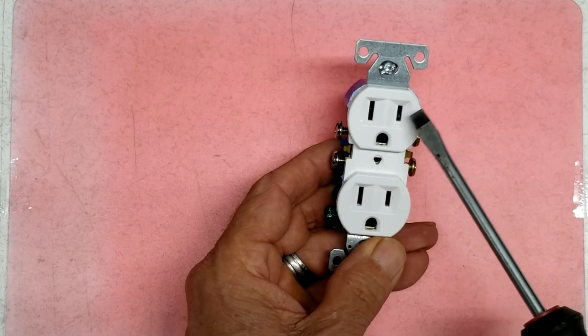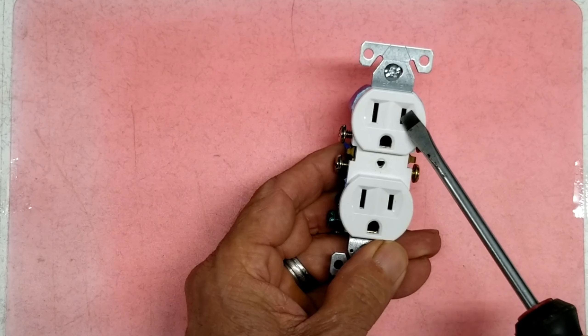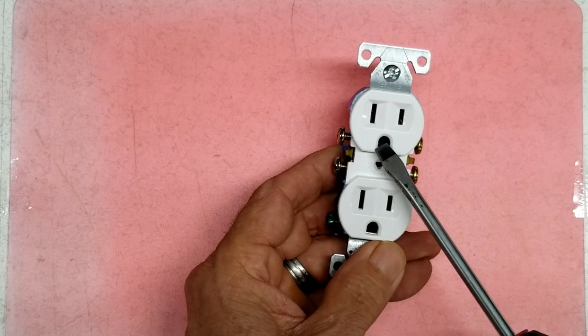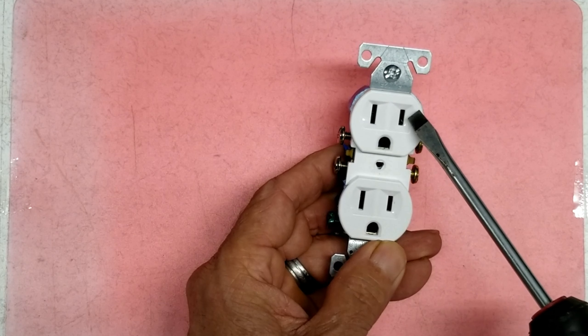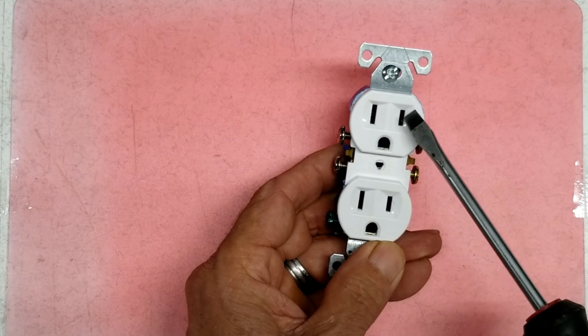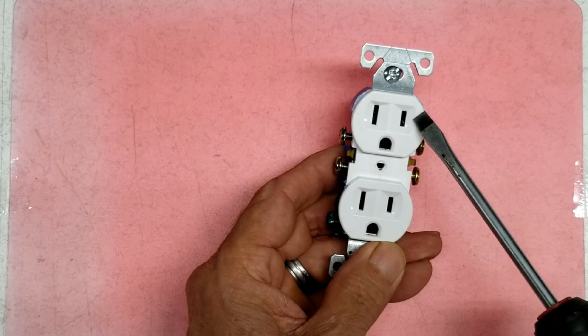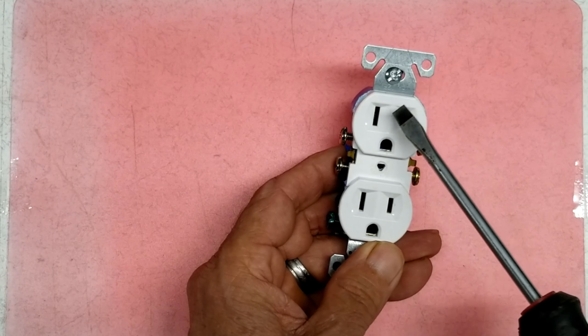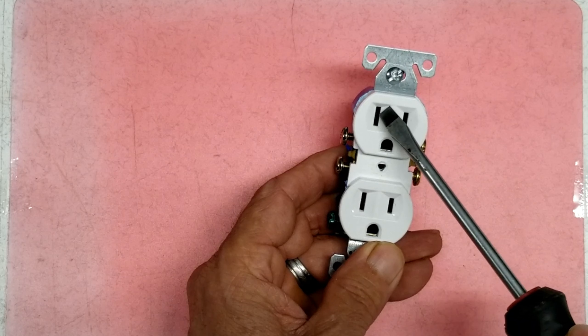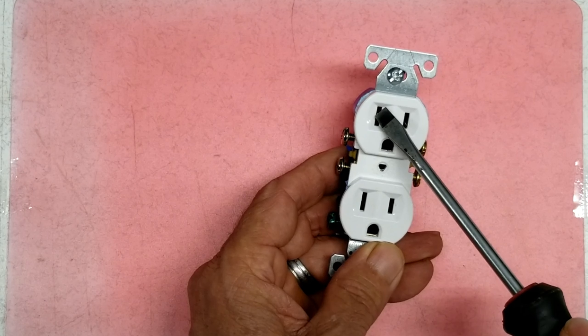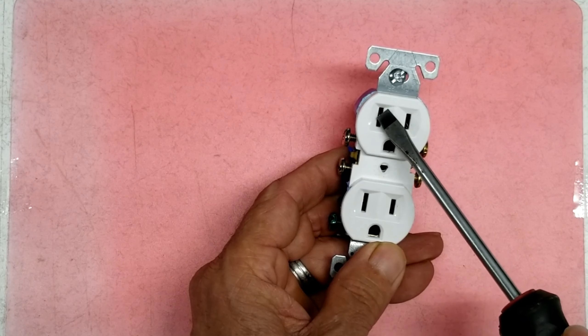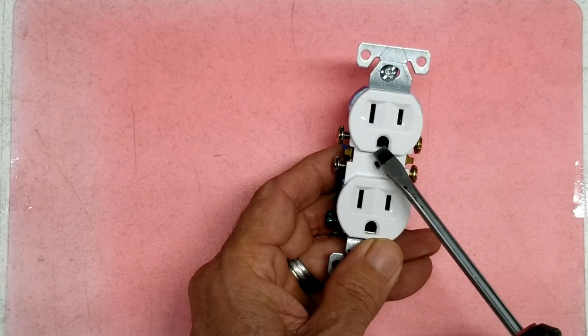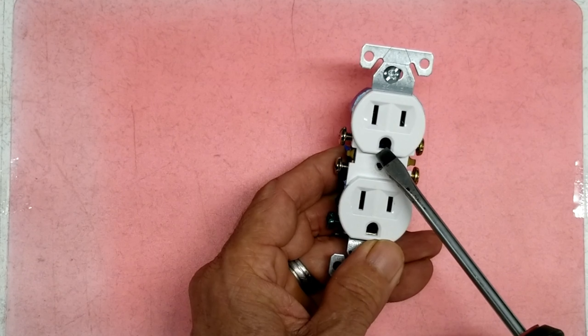First thing about these outlets is you need to know what these plugs are. You notice how you've got one side smaller than the other side, and you've got this oval one down here. The smaller one is your hot side. That's the power side. That's where the 120 volts comes out. This one right here, the long one, is your neutral that you return back to your circuit. This right here is the ground slot, your ground plug on your cord.